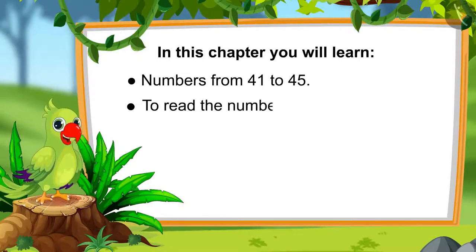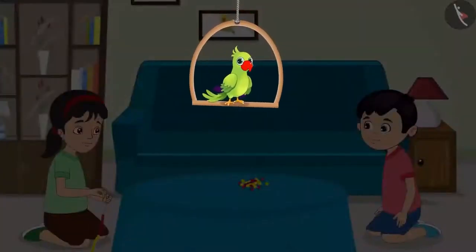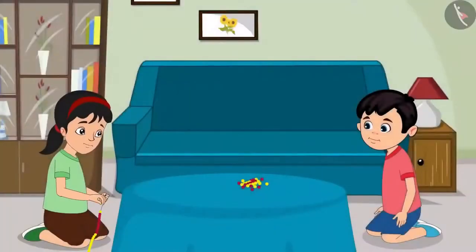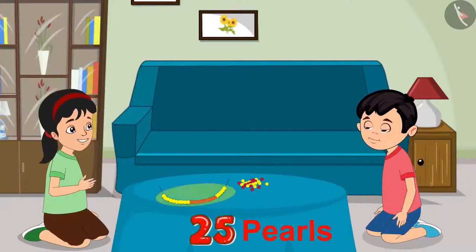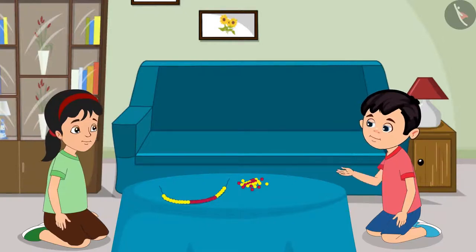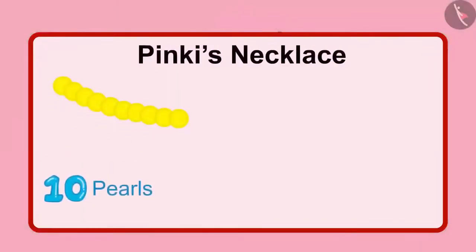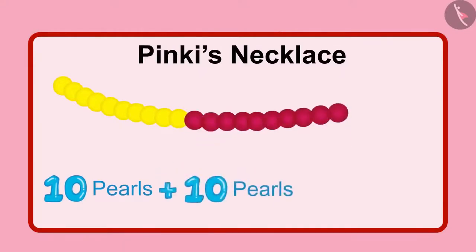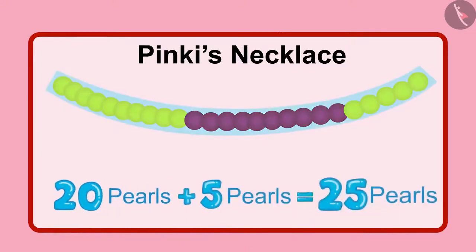While cleaning the house today, Pinky and Chotu found a packet of pearls. Looking at it, they thought they should make a beautiful necklace. Pinky says: 'I have made the necklace with 25 pearls.' Chotu asks how she knew. Pinky explains: 'I put 10 yellow pearls, then 10 red pearls — 2 groups of 10, that becomes 20 pearls. Then I put 5 yellow pearls more. So that becomes 20 and 5, that is 25 in total.'